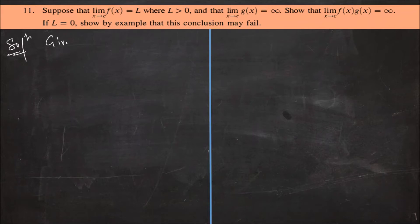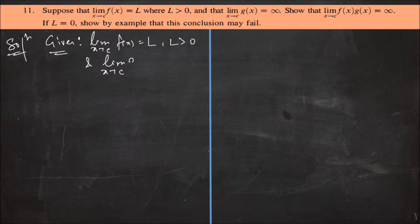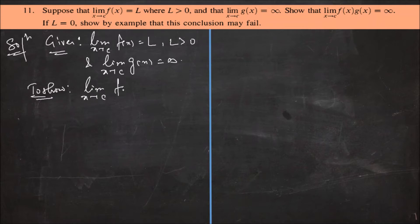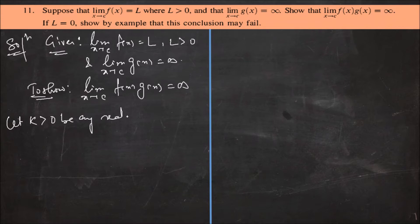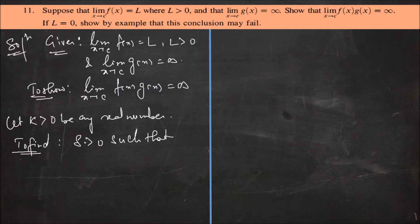In question number 11, we are given that limit x tends to c of f(x) is equal to L, where L is greater than 0, and limit x tends to c of g(x) is infinity. We have to show that limit x tends to c of f(x) times g(x) is equal to infinity. For this, we will take any k greater than 0. So let k greater than 0 be any real number. We have to find delta greater than 0 such that 0 less than |x minus c| less than delta should imply f(x)g(x) greater than k.